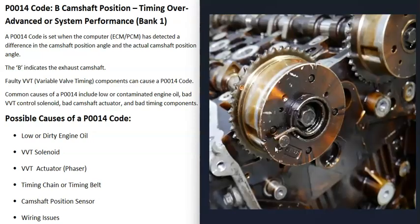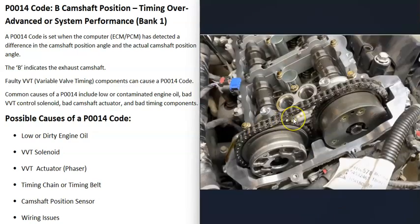The next cause on the list is a bad variable valve timing actuator, sometimes called the phaser. The timing chain or timing belt sits on top of the actuator, and this is where timing gets adjusted via oil pressure from the VVT solenoid. If there's an issue with the actuator, it can cause problems.